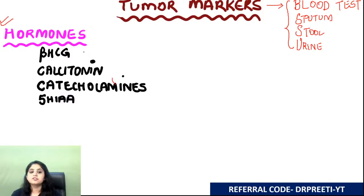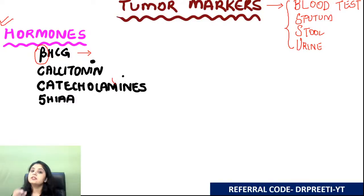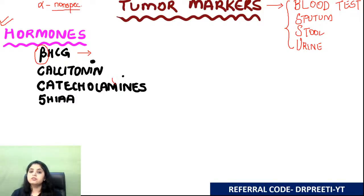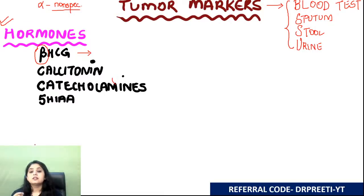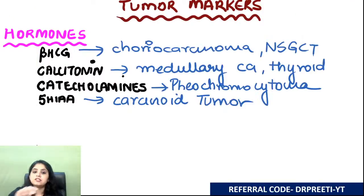First category: hormones. Beta-HCG — we always measure the beta subunit because the alpha subunit is non-specific; LH, FSH, TSH, and HCG all share the same alpha subunit. Beta-HCG is elevated in choriocarcinoma, and also in non-seminomatous germ cell tumors.